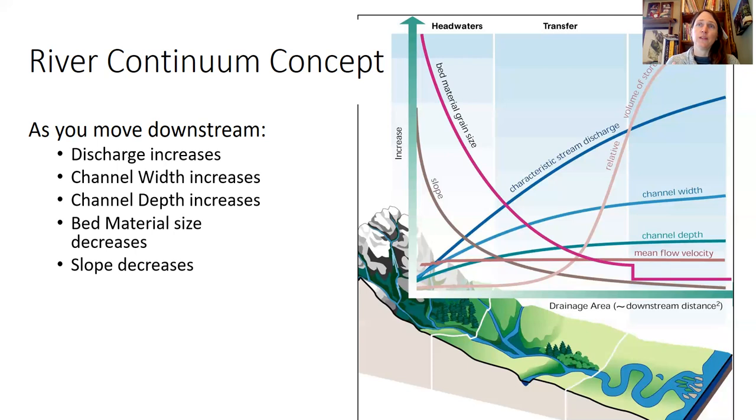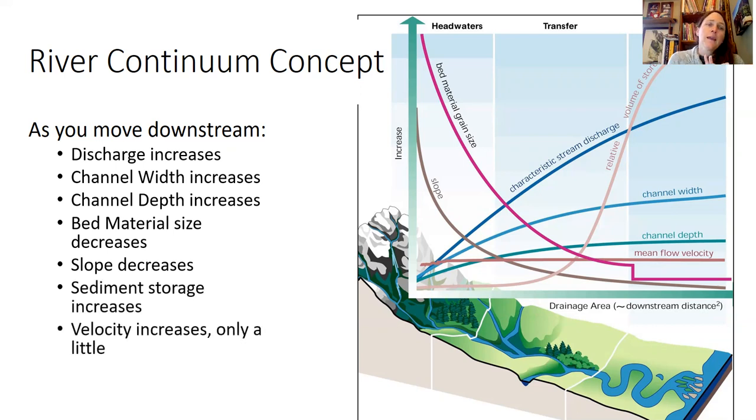The other thing that decreases as you move downstream is slope. You end up with really steep slopes at the mountain, and then as you get closer to the ocean, the slope flattens out. Sediment storage increases. Rivers tend to be erosional at the top, and then they start to be depositional, depositing material in the floodplain and storing sediment across their broad floodplain at the bottom.